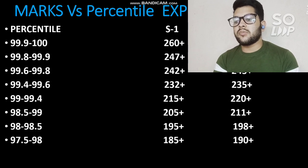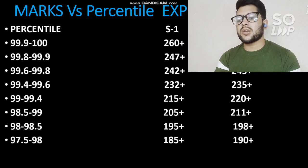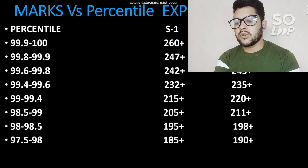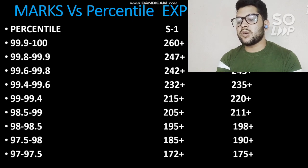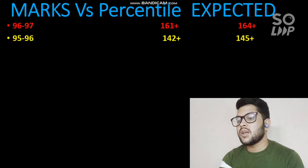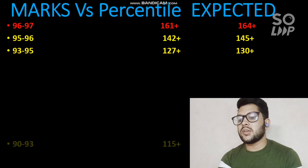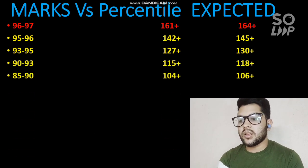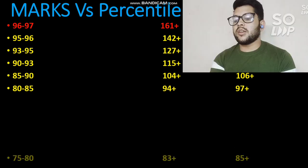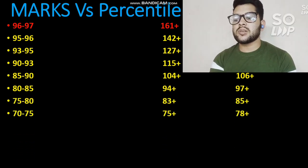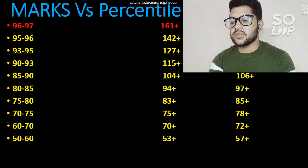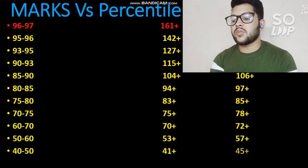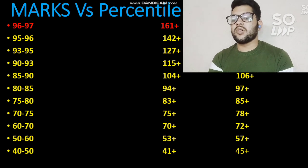For 26th August analysis, check the previous video linked in the description. Continuing marks vs percentile for Shift 1: for 97th percentile, 172+; for 96th, 161+; for 95th, 142+; for 93rd, 127+; for 90th, 115+; for 85th, 104+; for 80th, 94+; for 75th, 83+; for 70th, 75+; for 60th, 70+; for 50th percentile and above, 53+; for 40th percentile and above, 41+.